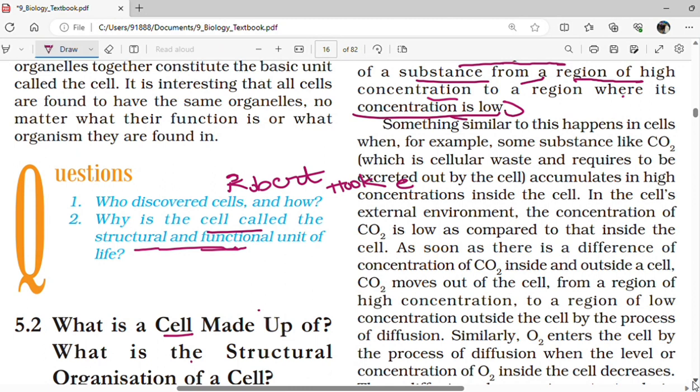If in the cell's external environment the concentration of CO2 is low as compared to that inside of the cell, then CO2 concentration within the cell inside the cell is high and outside is low. As soon as there is a difference of concentration of CO2 inside and outside the cell, molecules move from higher region of concentration to lower region of concentration.